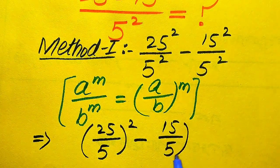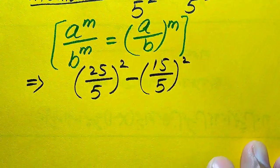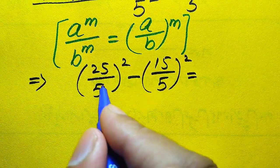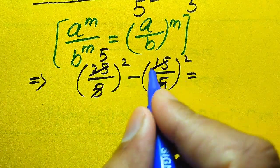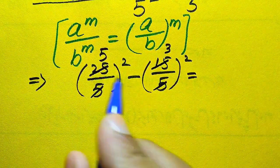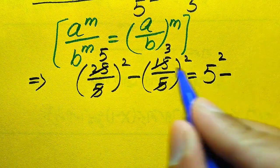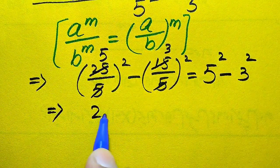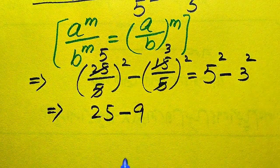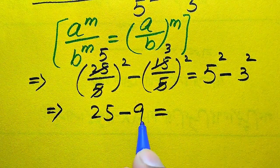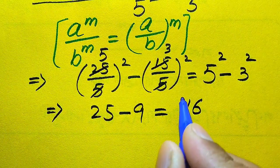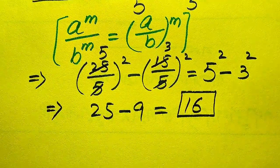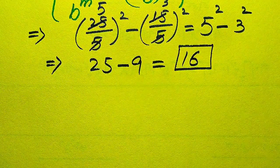It becomes (25/5)² minus (15/5)². Now we simplify: 25 is 5 times 5, and 15 is 5 times 3, so we get 5² minus 3². Then 5² equals 25 and 3² equals 9, and 25 minus 9 equals 16. So 16 is the simplified form from the first method.